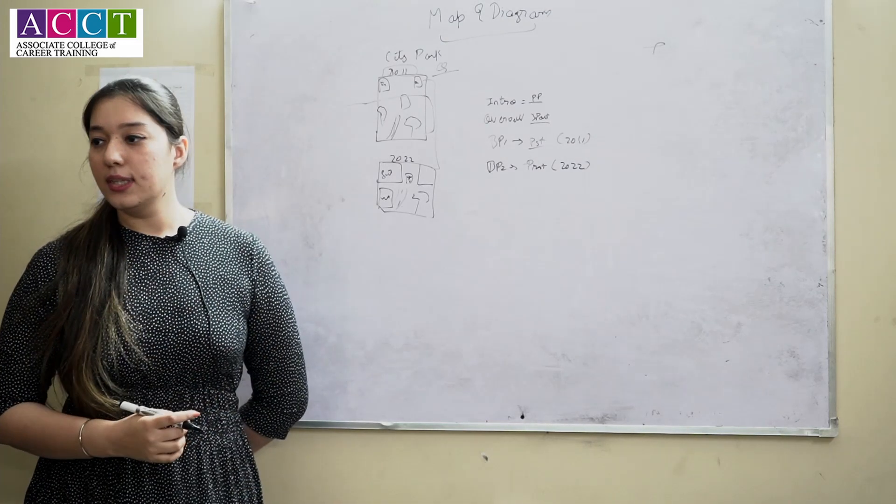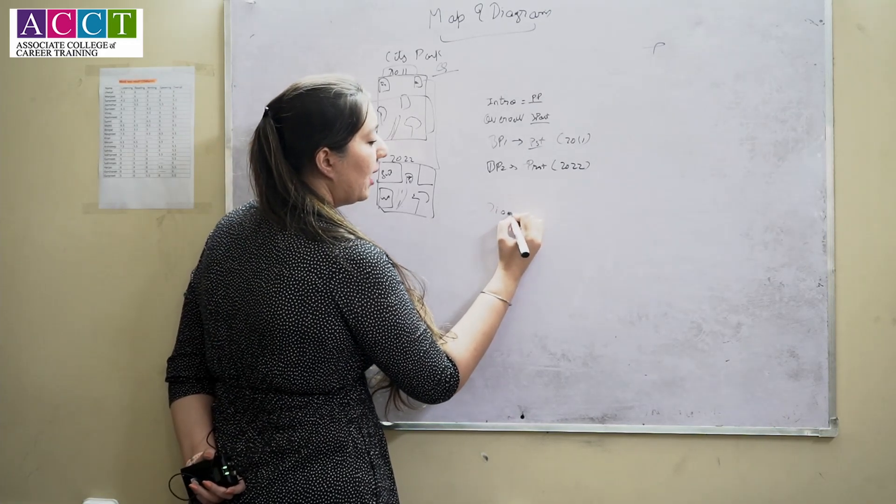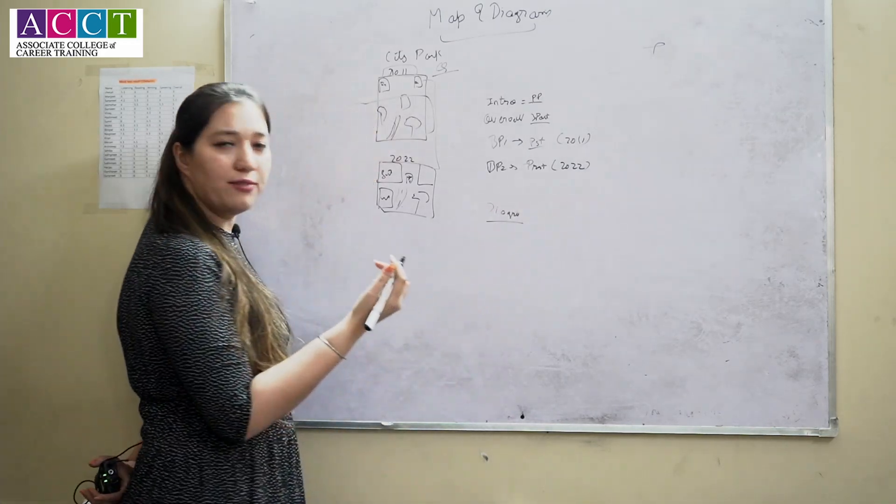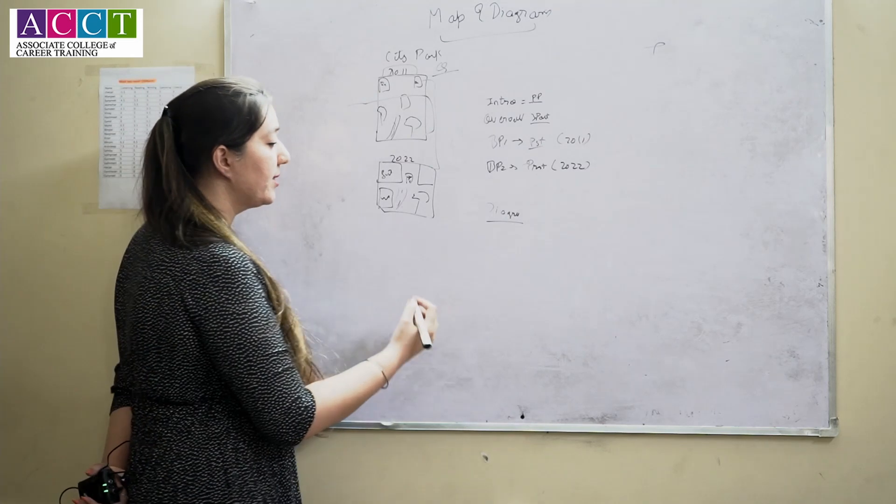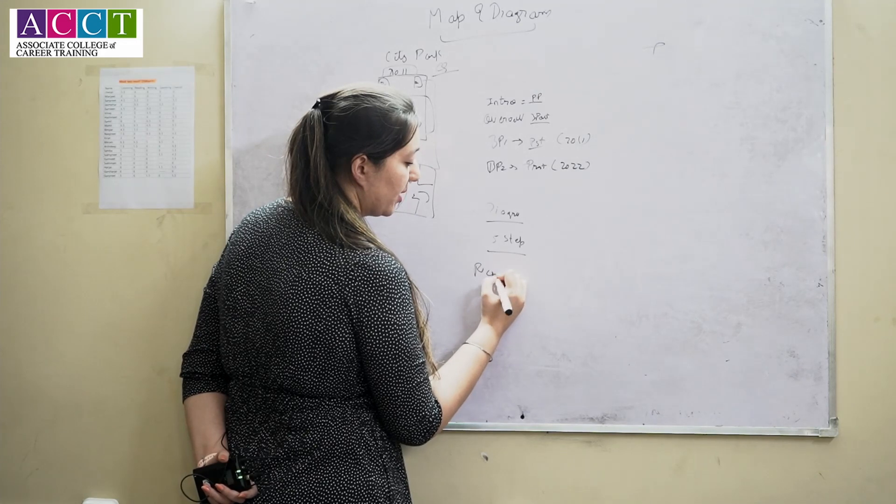Is it clear till now, the map? Moving towards the diagram. So diagram will be a process, a process in which there will be several steps. For example, five steps has been given of recycling process.